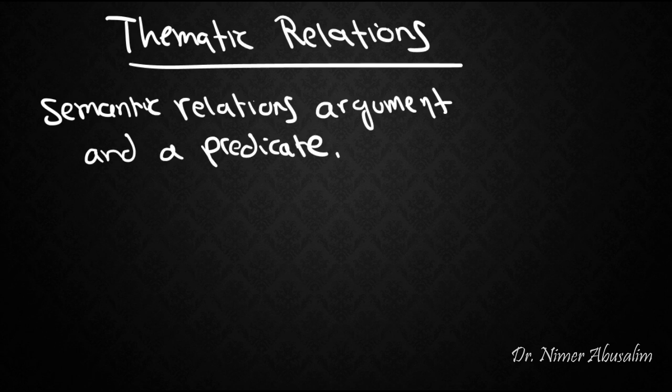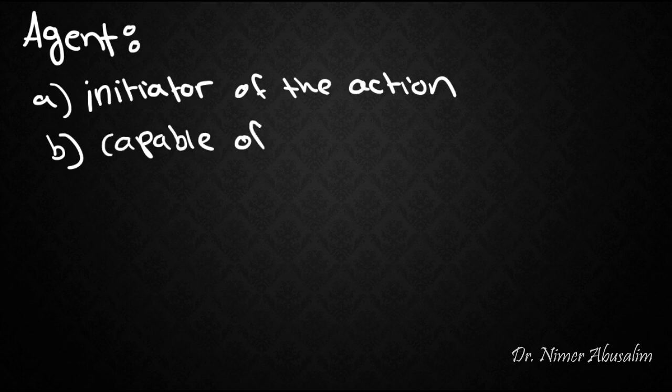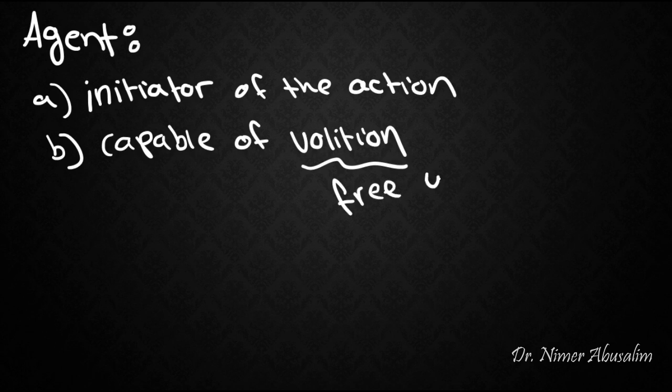The first one we're going to talk about is the agent thematic relation. Now the agent is known as the initiator of the action and also the agent is capable of volition. Volition means that the agent can act with conscious and free will.